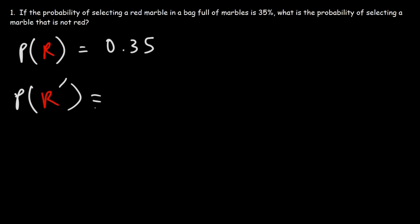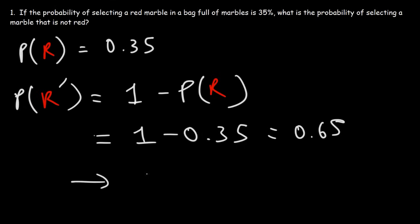Based on the formula that we wrote before, it's going to be one minus the probability of getting a red marble. So it's 1 minus 0.35, which is 0.65. So there's a 65% chance of getting a marble that is not red.